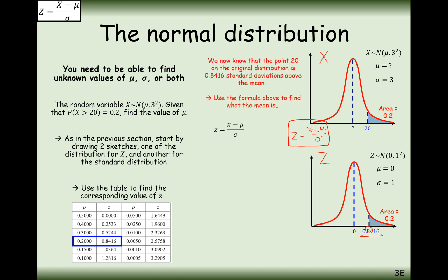So Z equals X minus mu divided by sigma. The Z value is 0.8416, the X value is 20, and sigma is 3. Rearranging this, we get 17.5 as our value for the mean.